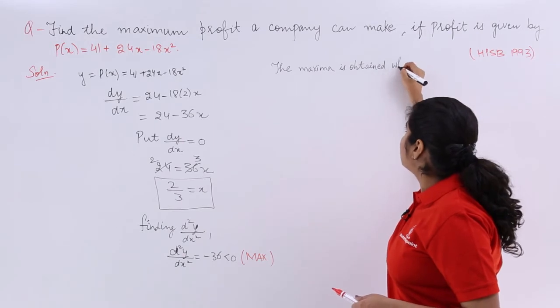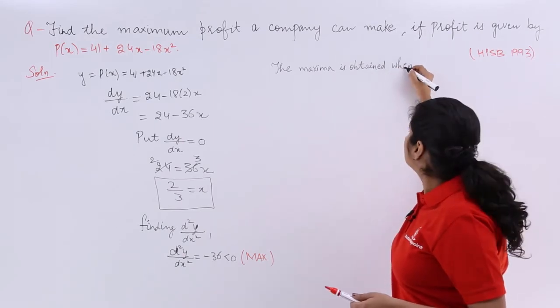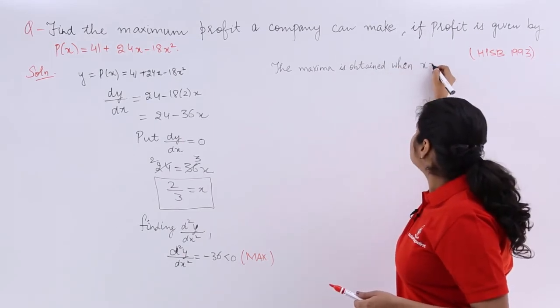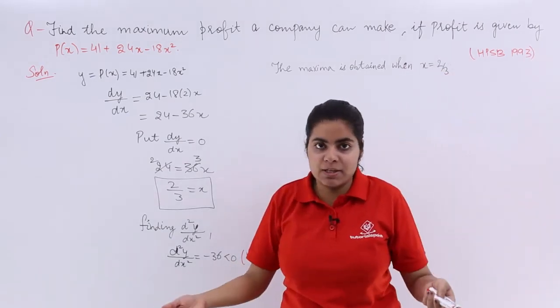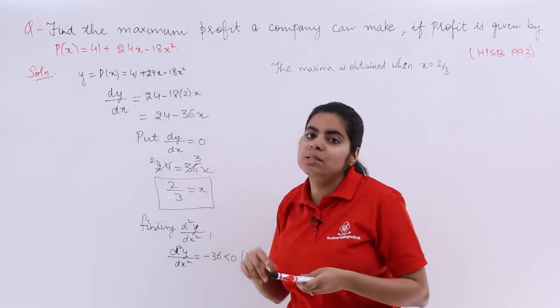The maxima is obtained when my x = 2/3. But it is not asking you when the maxima is obtained, it is asking you what is the maximum profit.